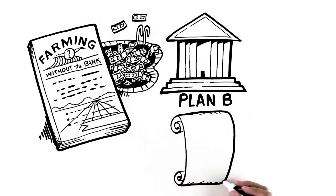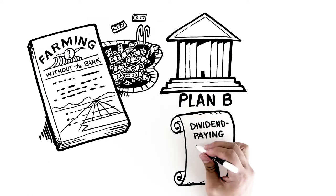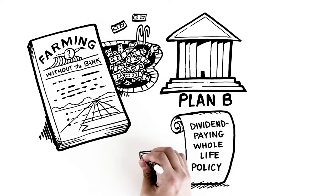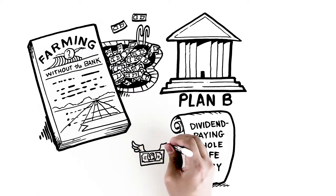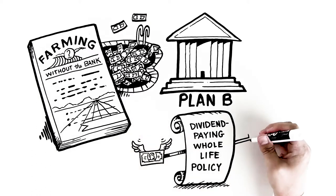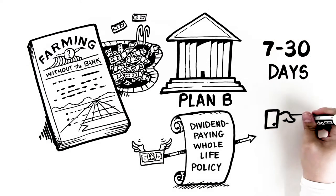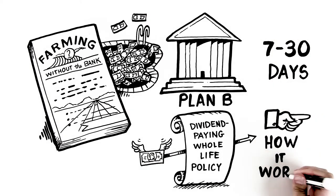The tool used to do this is a properly structured dividend-paying whole life policy. A policy structured this way gives you faster cash value growth and access to that cash value within 7 to 30 days. If you're not familiar with this type of policy, here's how it works.